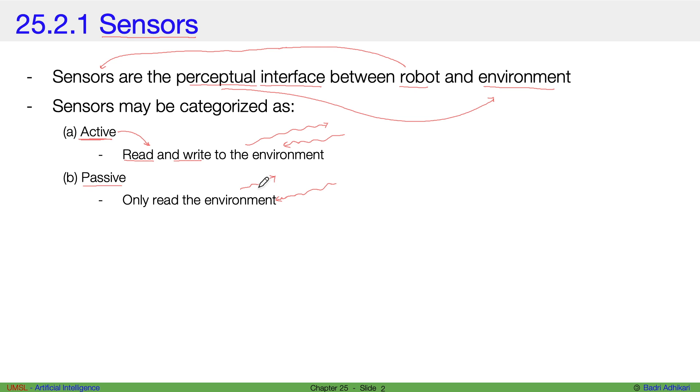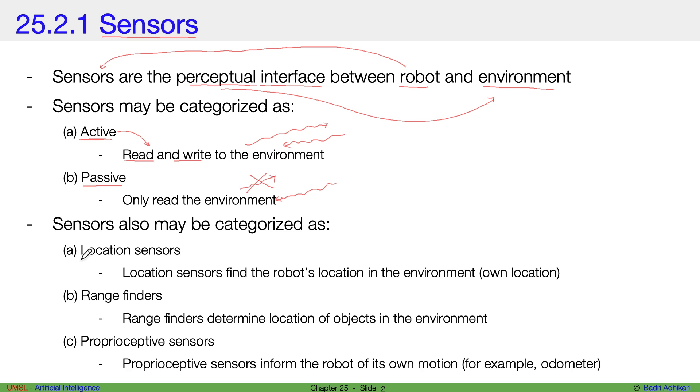They don't release anything to the environment. Another way to classify sensors is to look at whether they are location sensors, range finders, or proprio-receptive sensors.